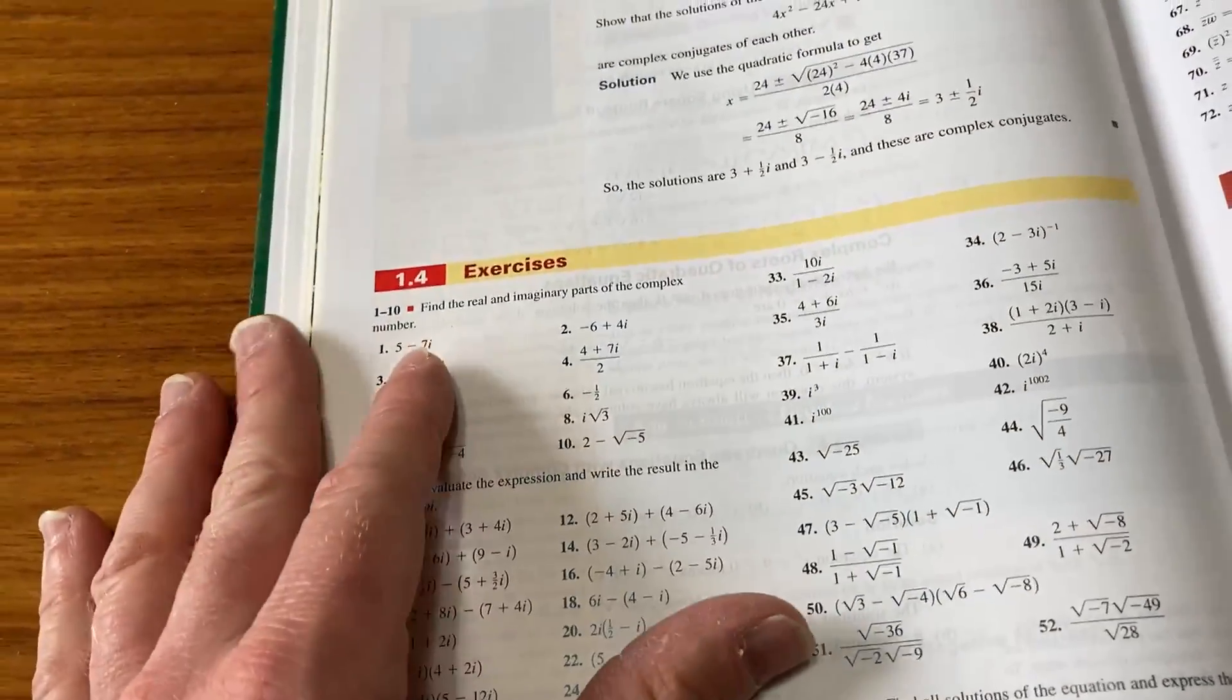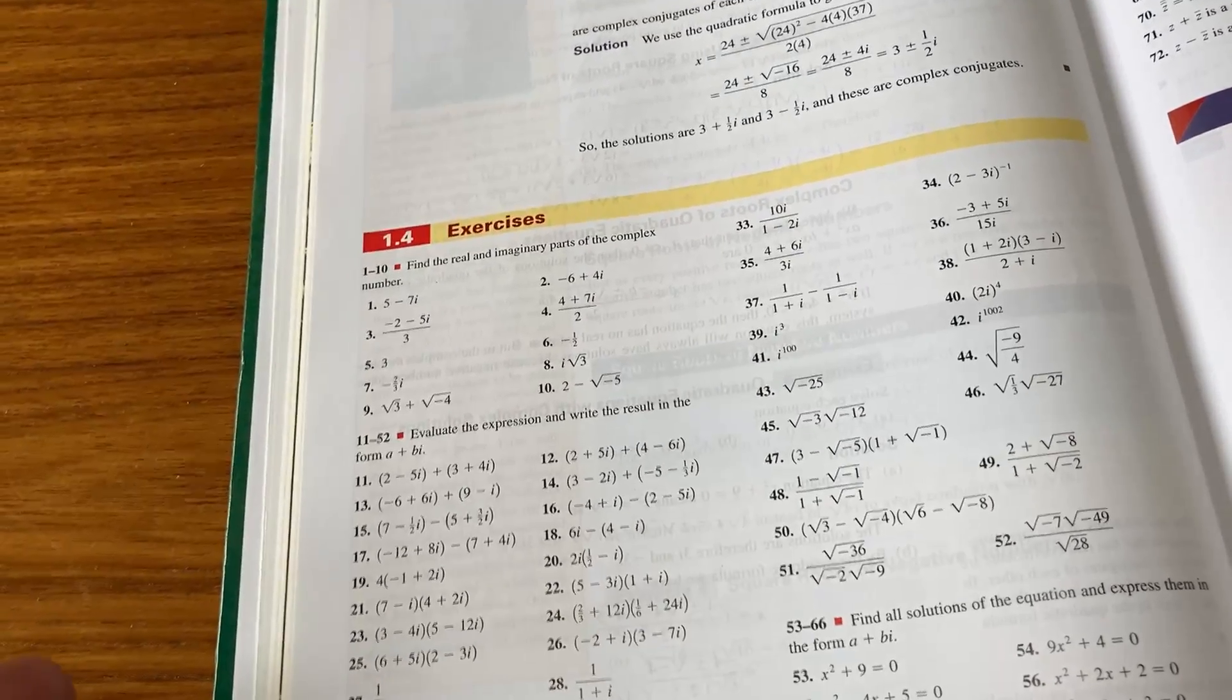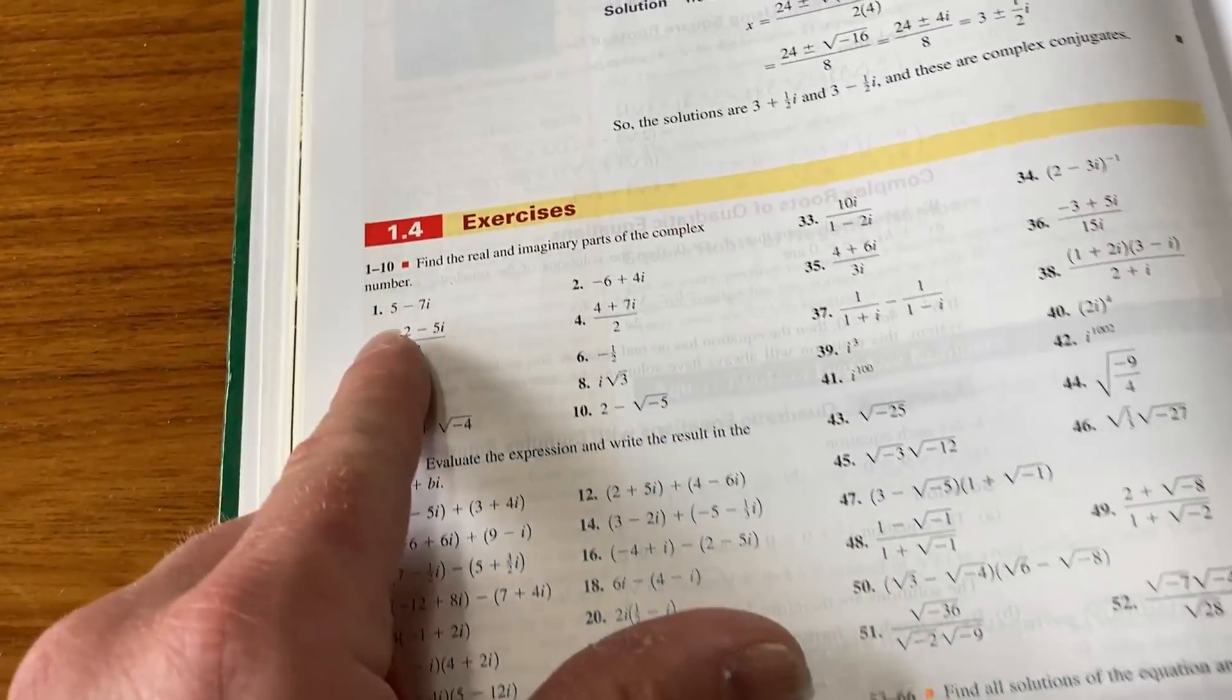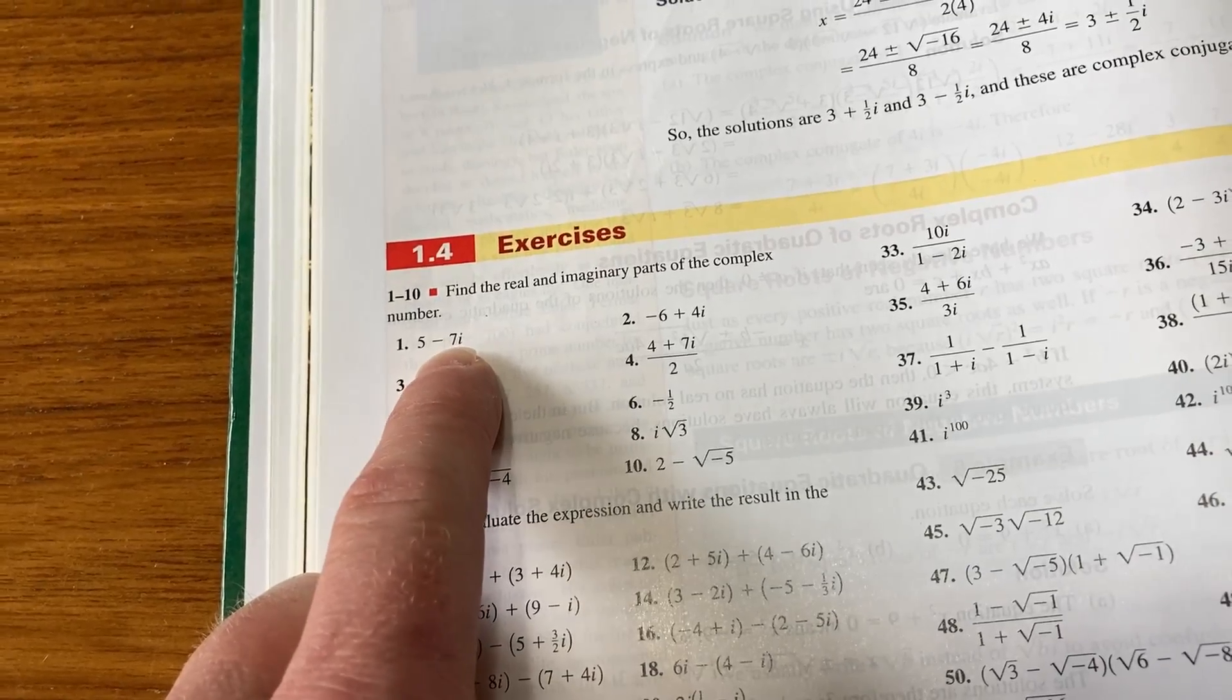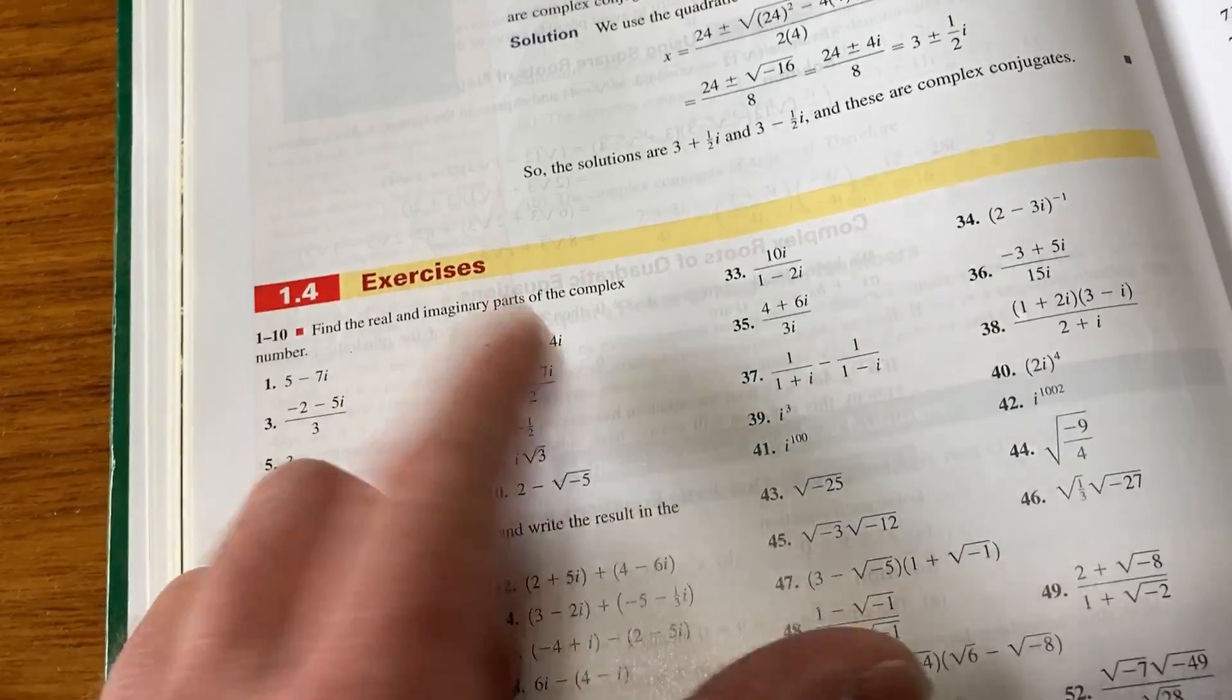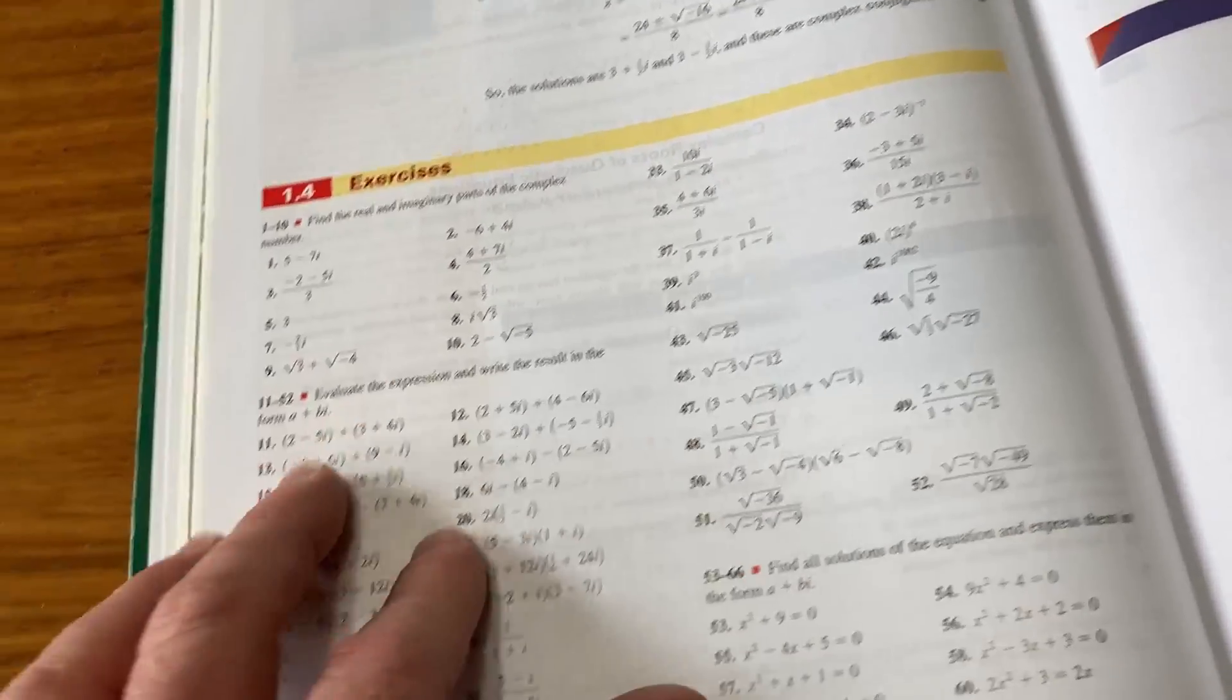This is the section on complex numbers. This is another really simple topic that most people should be able to learn. It's really not that hard. Here it talks about finding the real and imaginary parts of the complex number. It's very easy to do. The real part is the 5. The imaginary part is the negative 7. It's just the number in front of the i. So here it's negative 6, that's the real part. 4 is the imaginary part. Super easy. So once you learn how to do stuff like that, it's really not that bad.